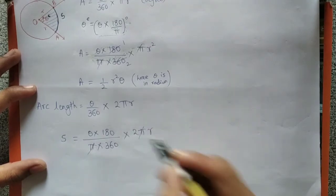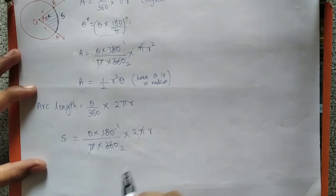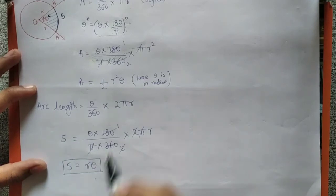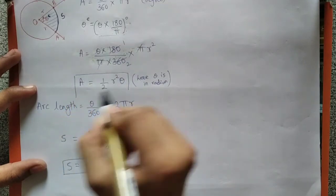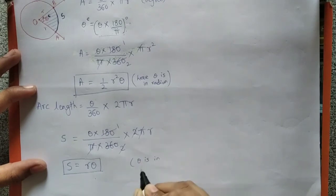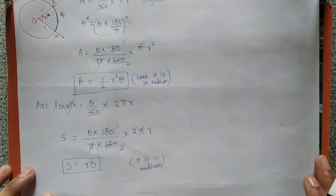Pi pi get cancelled, 180 and 360 simplify, 2 and 2 get cancelled. What is remaining? r theta. So S equal to r theta. This is the formula. For arc length: S = r theta, and area of sector: half r square theta. ये दोनों formula किसके लिए हैं? Theta is in radian।